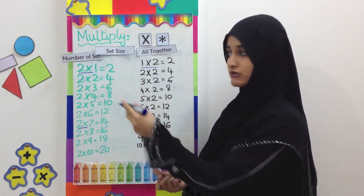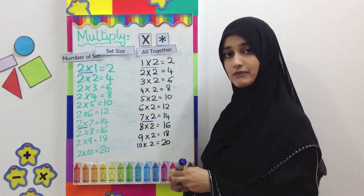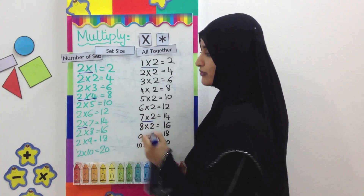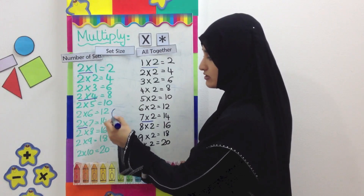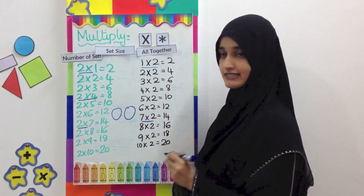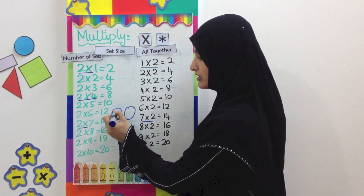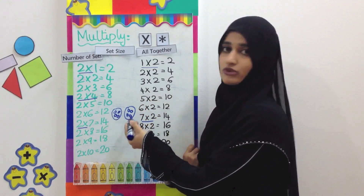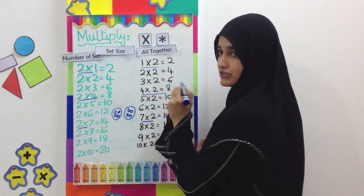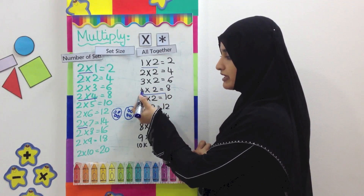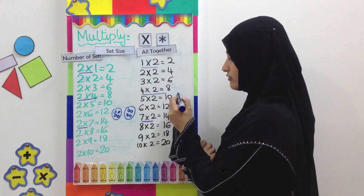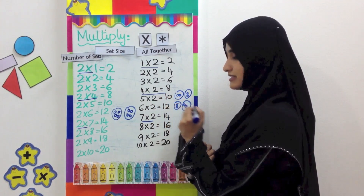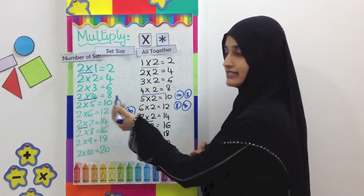Now I'm going to show you the difference between the two formats. In multiplication, the first number always tells you how many sets to make. Take the example two fours are eight — we make two sets, and in each set the size is four, so we put four balls in each set. Count them all together: four plus four makes eight. For four times two is eight, we make four sets and the set size is two. The answer remains the same: eight.